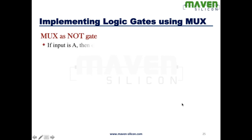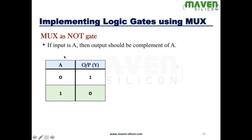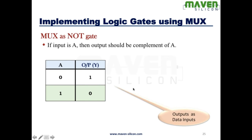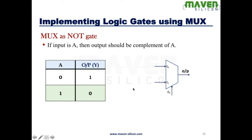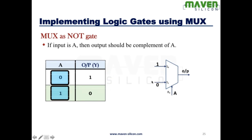Now let's look at how to realize a NOT gate through a MUX. Here the input is A and the output is Y. If input is zero, output will be one; if input is one, output will be zero. I'm going to map this input signal with the select signal. I connect A with the select line. If select is going to be zero, then I should get one, so I'm going to connect VCC with that input. If the select is going to be one, then I have to connect ground. One is nothing but VCC; zero is nothing but ground. You tie one input with VCC and the other with ground, and this is how the multiplexer works like an inverter.